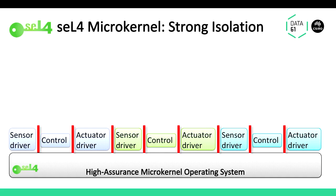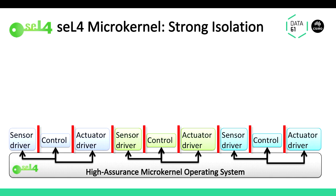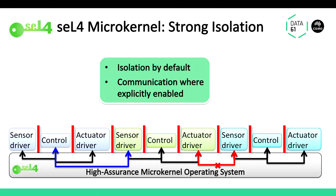With seL4, you can separate everything — all the drivers and control code from each other. Obviously they need to communicate, so there are explicit communication channels so control can read sensors and drive actuators. We can integrate sensor fusion where control talks to multiple sensors. But importantly, where we don't open explicit channels, there is no communication possible, with guarantees about that. This is a core requirement for safety-critical systems: seL4 provides isolation by default, and to enable communication you must explicitly provide a communication channel, which the kernel guarantees.